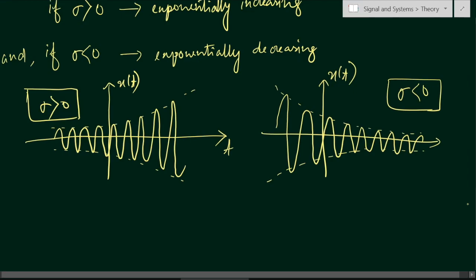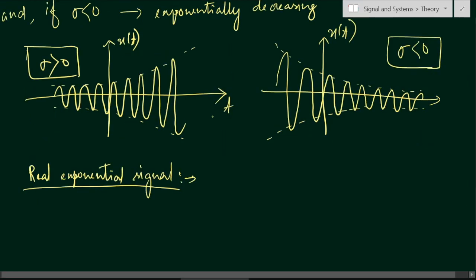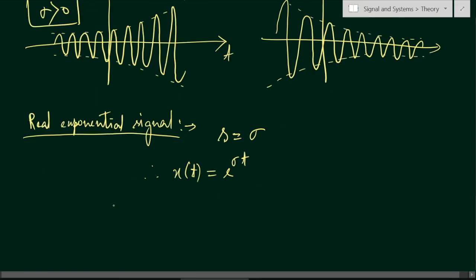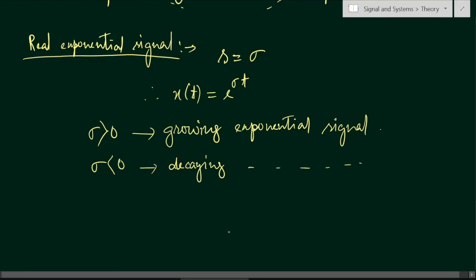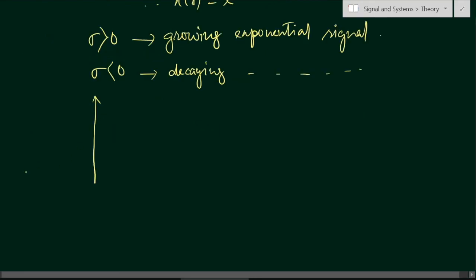A real exponential signal does not have an imaginary part. Here s = σ only, with no jω term. Therefore x(t) = e^(σt). If σ > 0, it is a growing exponential signal; if σ < 0, it is a decaying exponential signal.